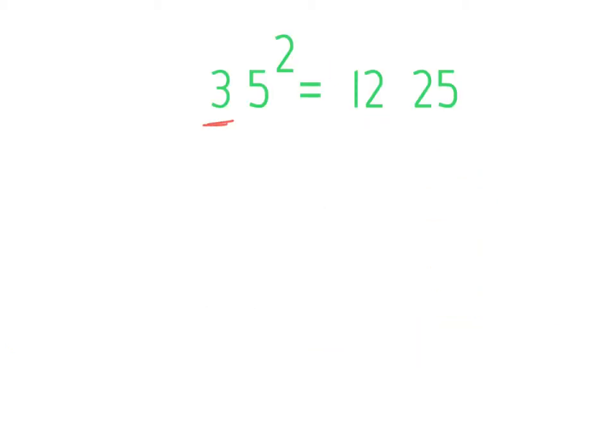Take the digit in front of 5 and multiply it with its next number. For example 35 square. The next number to 3 is 4.